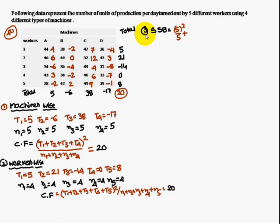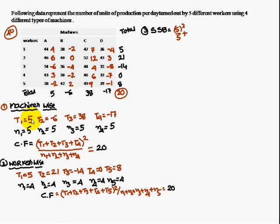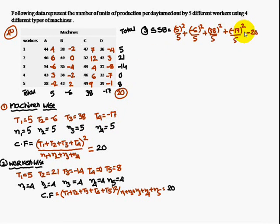For the third step, compute the machines-wise sum of squares (SSB). The formula is: (T1² / n1) + (T2² / n2) + (T3² / n3) + (T4² / n4) minus the correction factor. That is (5² / 5) + ((-6)² / 5) + (38² / 5) + ((-17)² / 5) minus 20.